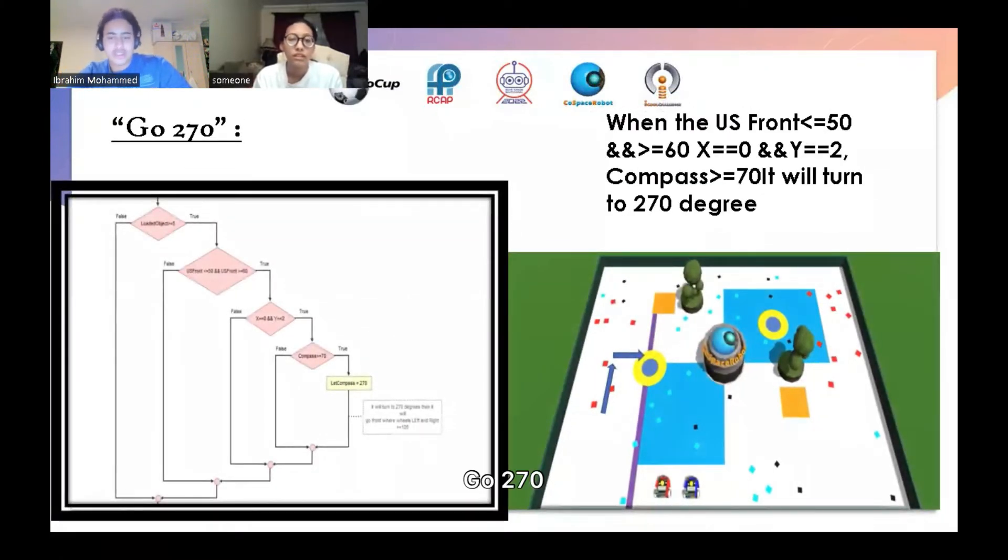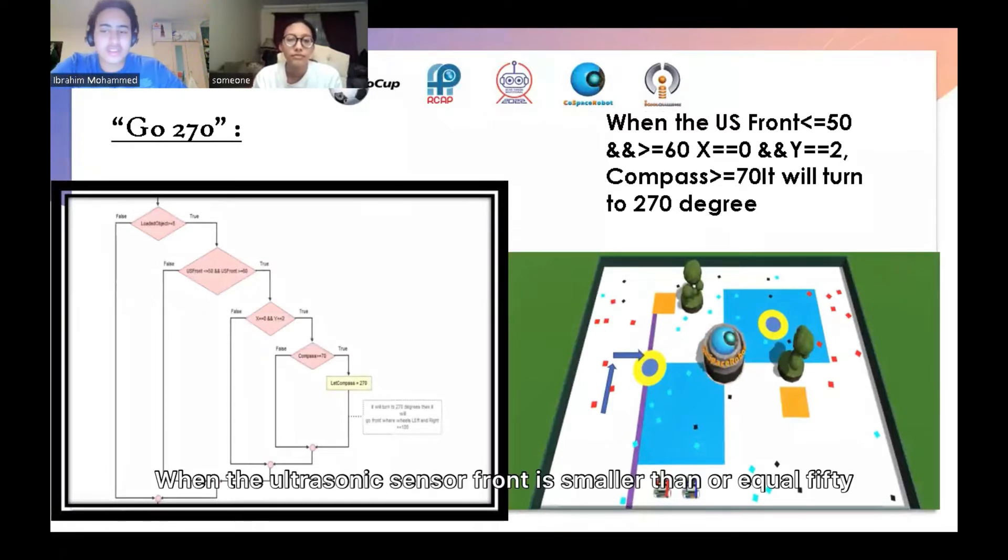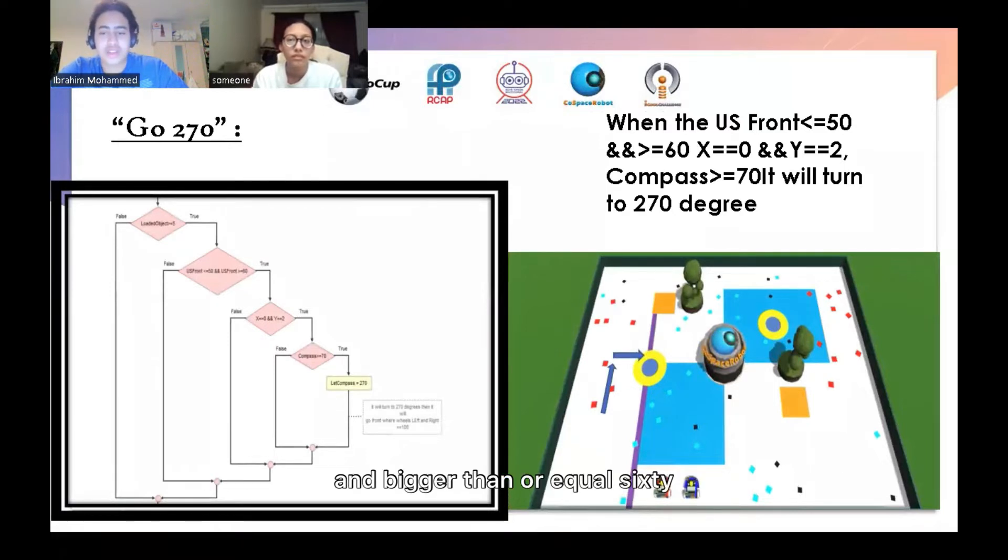Go 270: When the ultrasonic sensor front be smaller than or equal 50 and bigger than or equal 40, x equals 0, y equals 2, compass bigger than or equal 70, it will turn to 270 degrees.